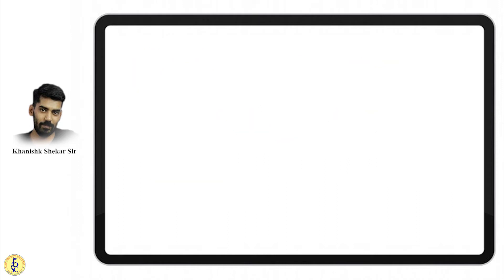Fukuyama adds that end of history doesn't mean end of events. Events will keep happening, but liberal democracy has been established. There might be revolutions, communist monarchs, or dictators coming to power, but liberal democracy is here to stay forever.